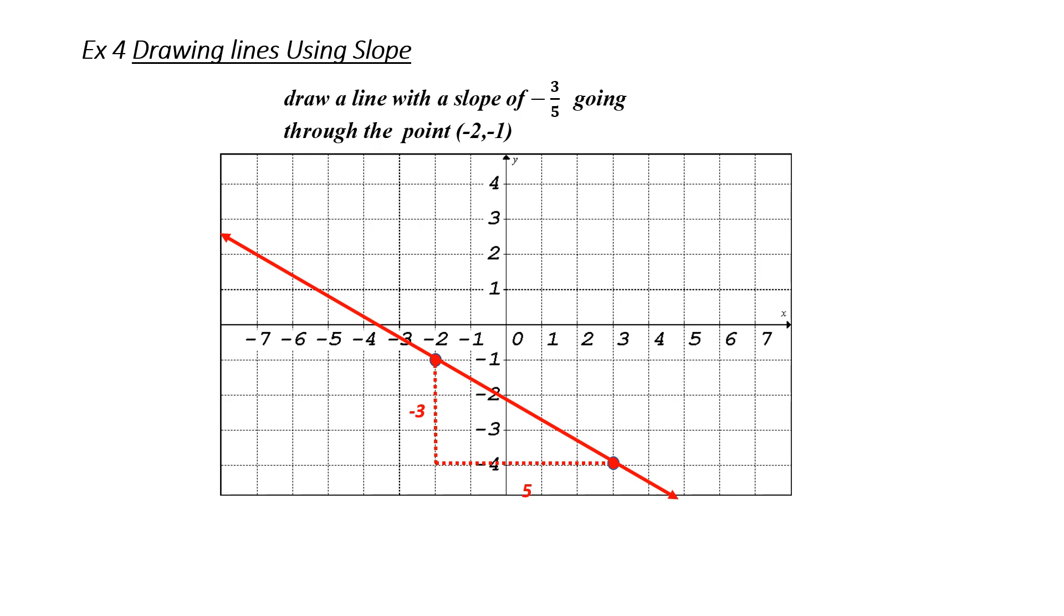Instead of going down 3, I could go up 3 which is positive. In order for this to make sense, one of my values has to go in the negative direction. So, that would mean that I would have to go over 5 in the negative direction. Notice that there would be a point right on the line at the end of 5. This is another way that we could possibly draw our line in the event that we weren't able to go down 3.